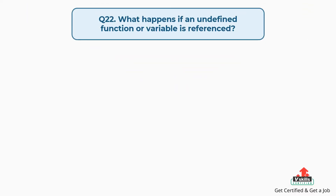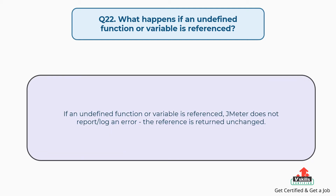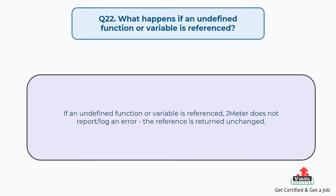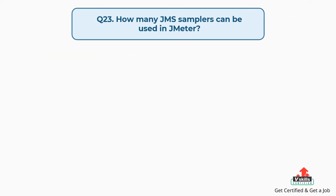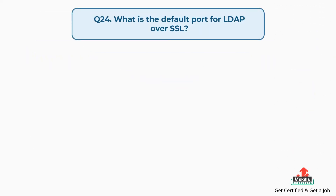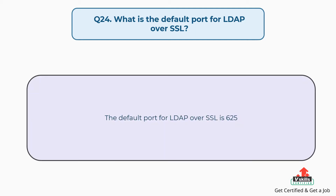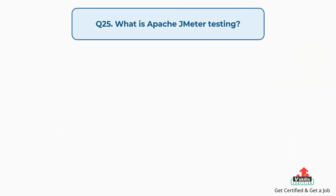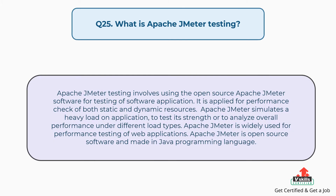Question 22: What happens if an undefined function or variable is referenced? If an undefined function or variable is referenced, JMeter does not report or log an error — the reference is returned unchanged. Question 23: How many JMS samplers can be used in JMeter? There is one JMS sampler that can be used in JMeter. Question 24: What is the default port for LDAP over SSL? The default port for LDAP over SSL is 636.